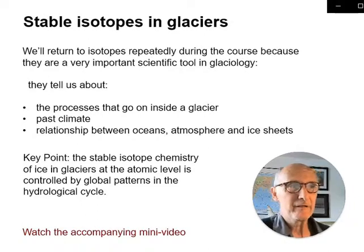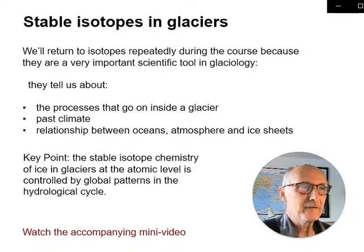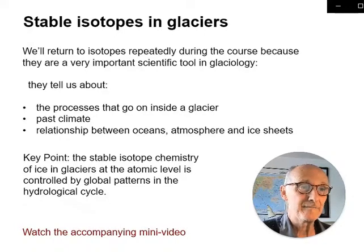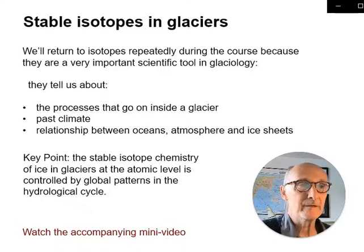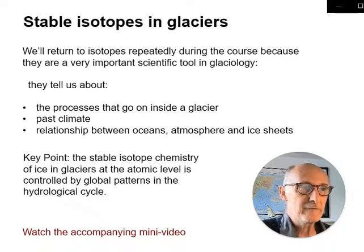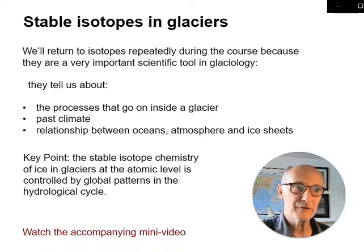I'll explain what isotopes are and how stable isotope glaciology works in a separate video. But at this point, I just want to make the point that isotopes can tell us about a number of different things. We can use analysis of stable isotopes in glacier ice to tell us about processes going on inside the glacier; we can also use them to look at past climate; and we can use them to look at the relationship between oceans, atmosphere, and ice sheets. The key point is that the stable isotope chemistry of ice — at the atomic level — is controlled by global patterns in the hydrological cycle. That's the connection between scales.